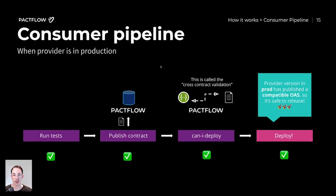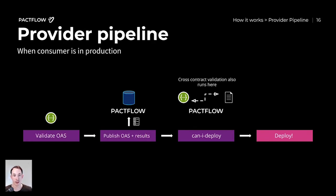What we just learned is that during the Can I Deploy step, Pactflow checks the version of the application you're deploying against the versions of the applications it needs to integrate with in the target environment, and performs what we call cross-contract validation. It checks that the consumer contract is a valid subset of the provider contract. If the consumer added something the provider doesn't support, it will fail the consumer's build. But it also does this on the provider side — so the next time the provider makes a change, it will make sure the provider cannot push a change that will break or be incompatible with its existing consumers.